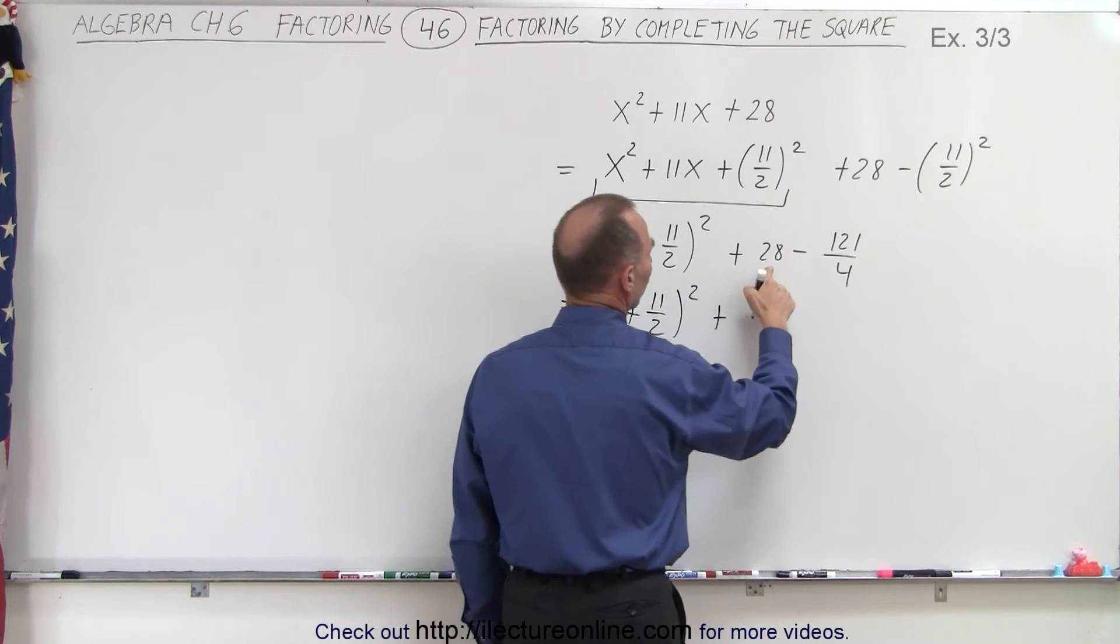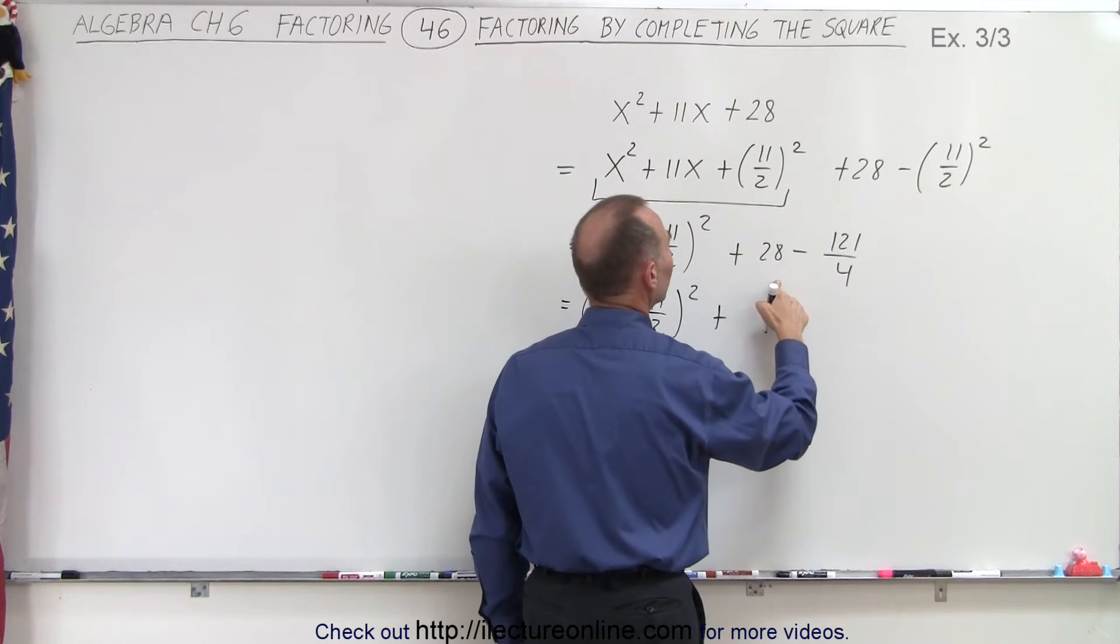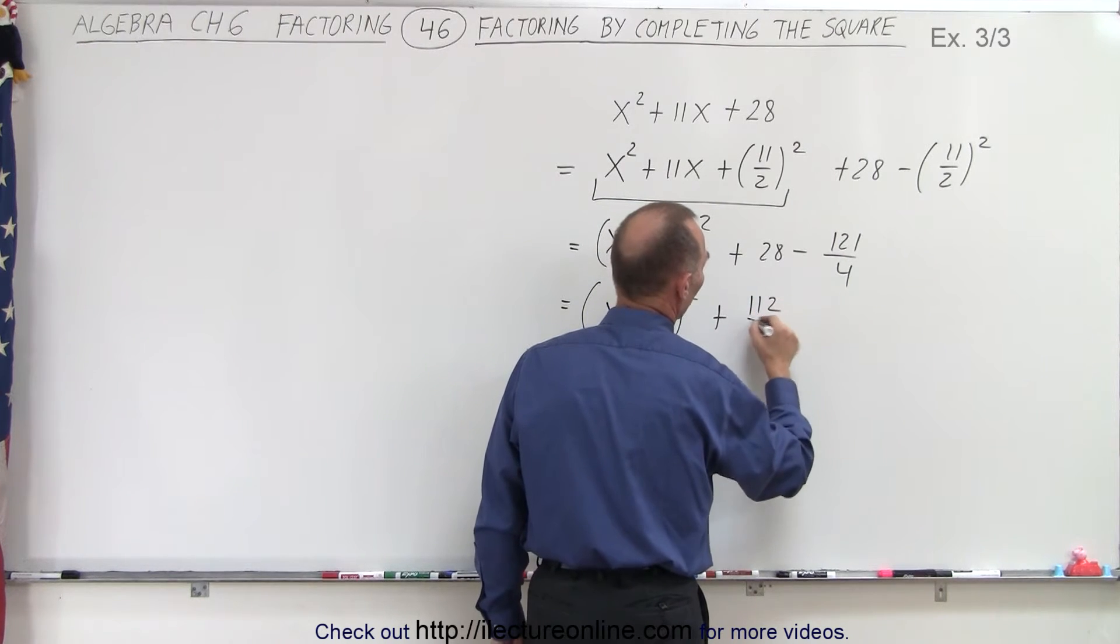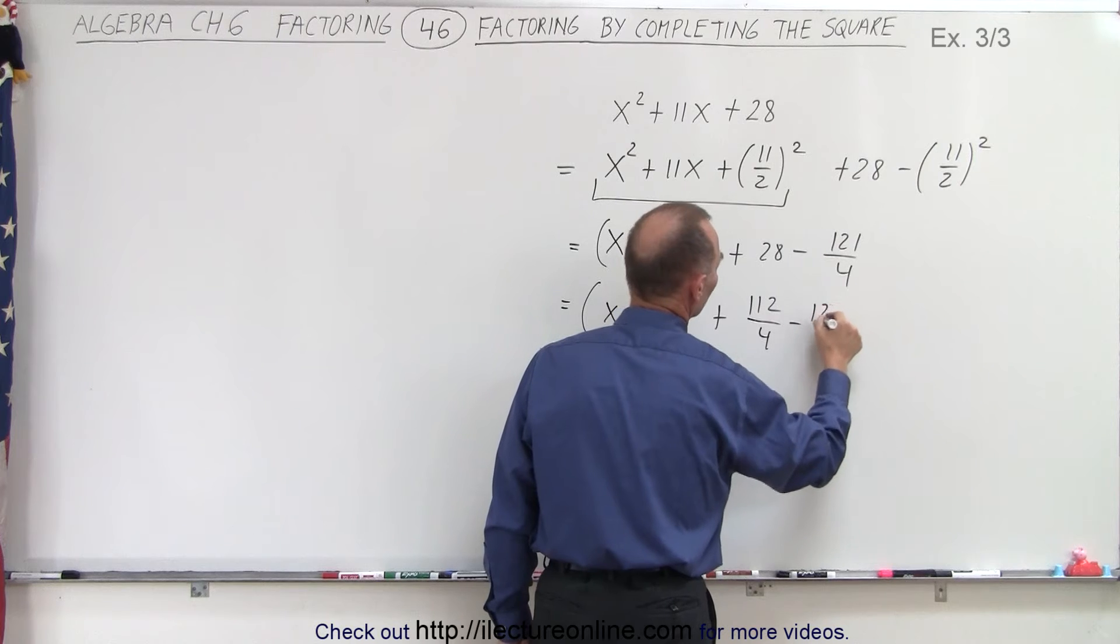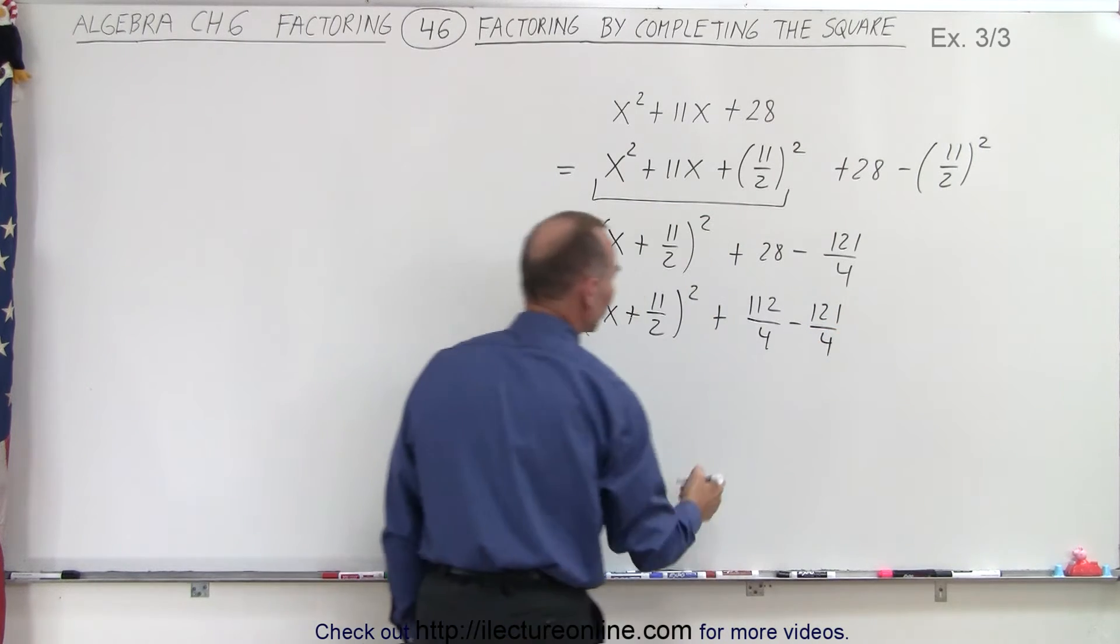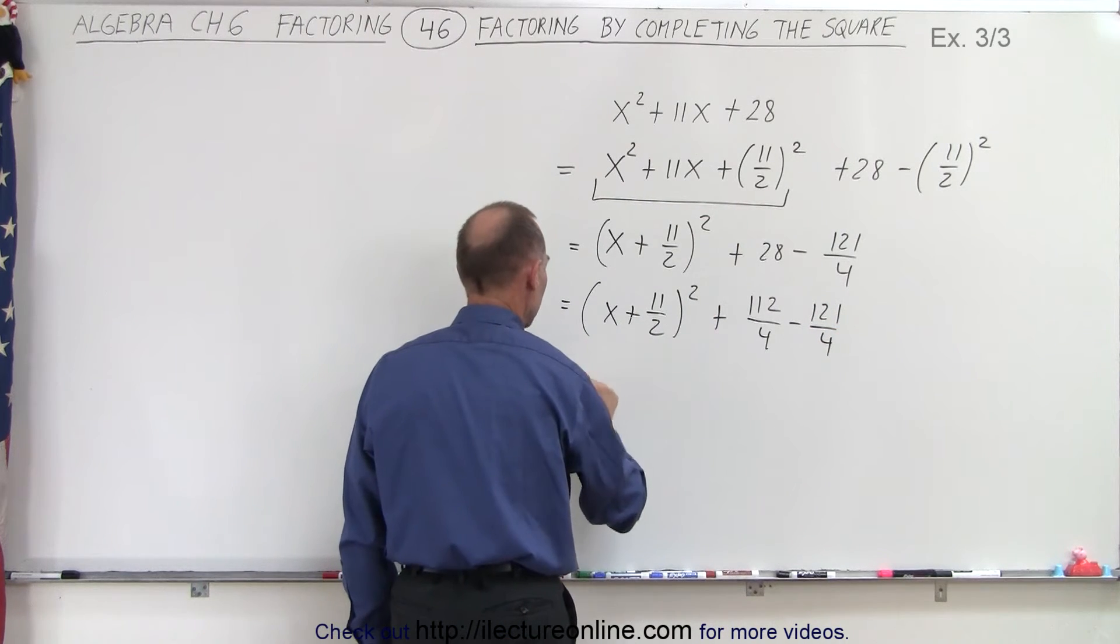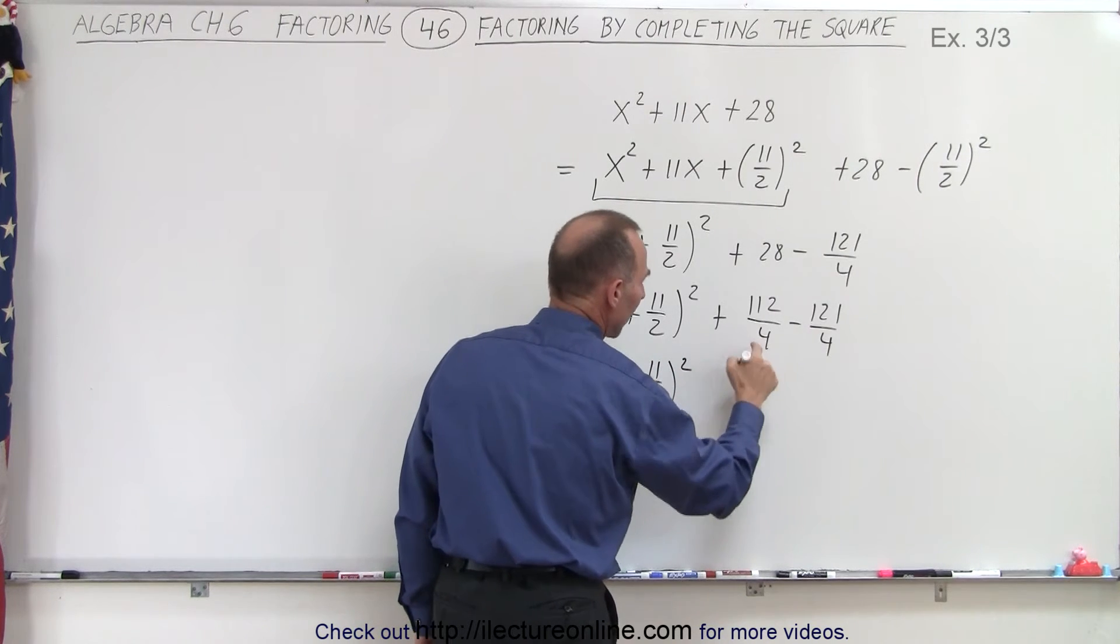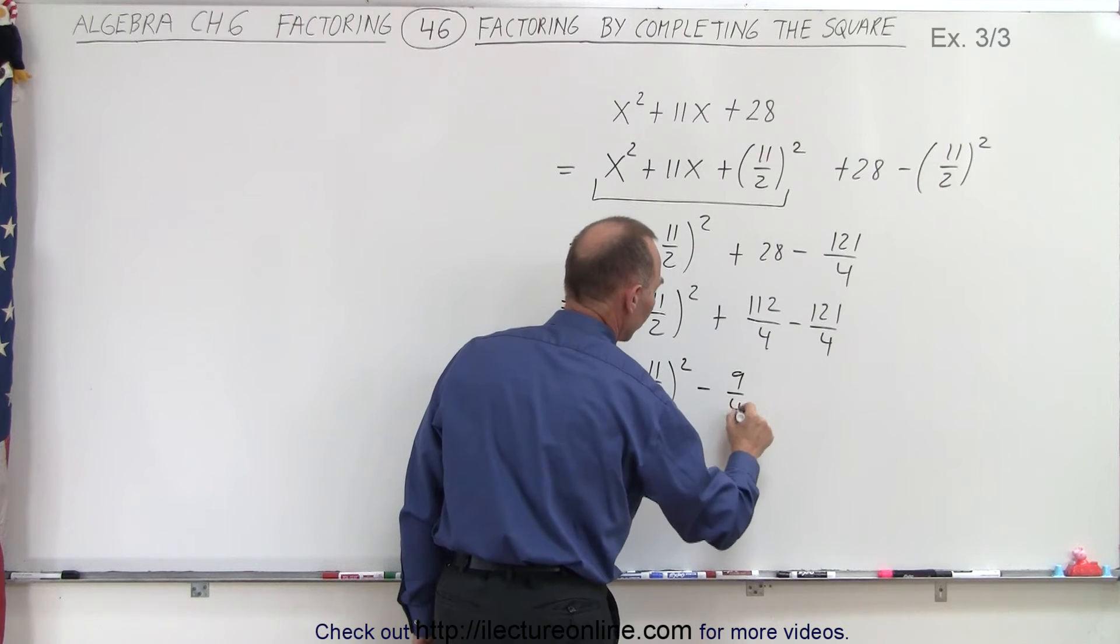So this can be written as x plus 11 over 2 squared. And then plus 28 over 4 can be written as, let's see, that looks like 112 over 4 minus 121 over 4, which can then be combined to be x plus 11 over 2 quantity squared. That would be minus 9 over 4.